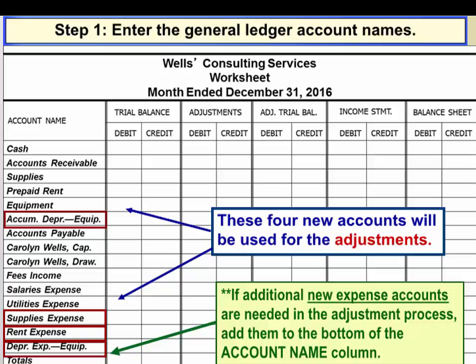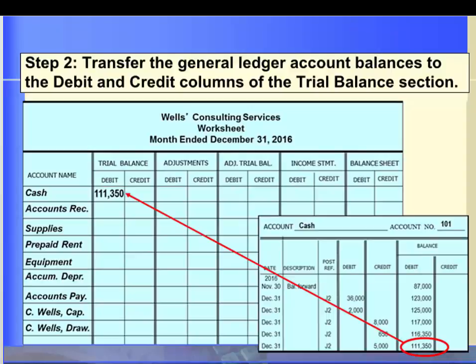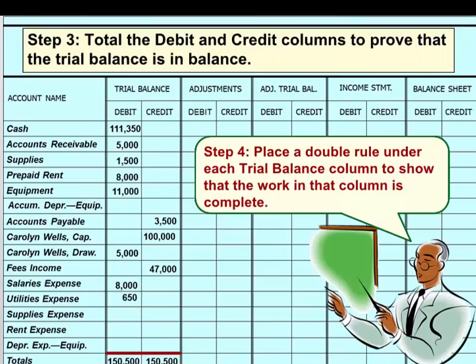To enter a trial balance on the worksheet, you would follow these steps. The first step is to enter the General Ledger account names. We will need to add four new accounts at this time so that we can make adjustments at the end of the month. If you are not sure whether you need any additional accounts or what those account names will be, you can add them at the bottom of the existing list of accounts in that column. Next, using the General Ledger, we transfer the account balances to the debit and credit columns of the Trial Balance section.